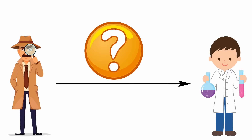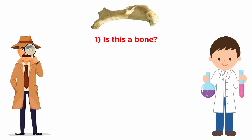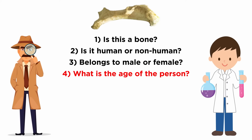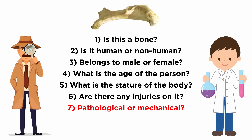Let us understand what kinds of questions are posed by the investigator to the laboratory. If a piece of bone is submitted for analysis to the biology division, the list of questions will include: 1. Is the material a bone? 2. If yes, does it belong to a human or non-human? 3. If it is human, does it belong to a male or a female? 4. What is the approximate age of the person? 5. What is the estimated stature of the body? 6. Are there any marks of injury on the bone? 7. Are the injuries pathological, caused due to disease, or mechanical, inflicted by impact?